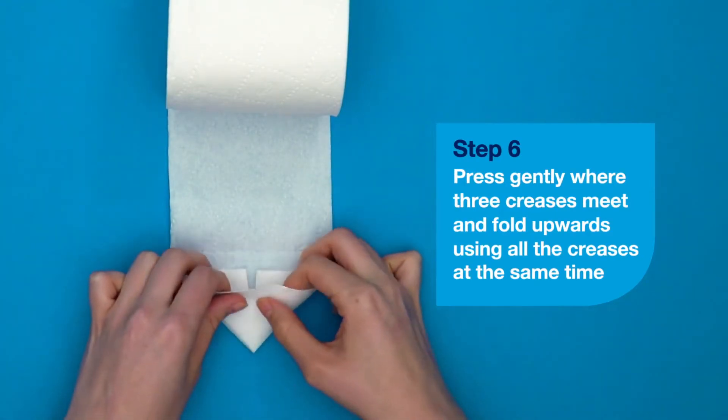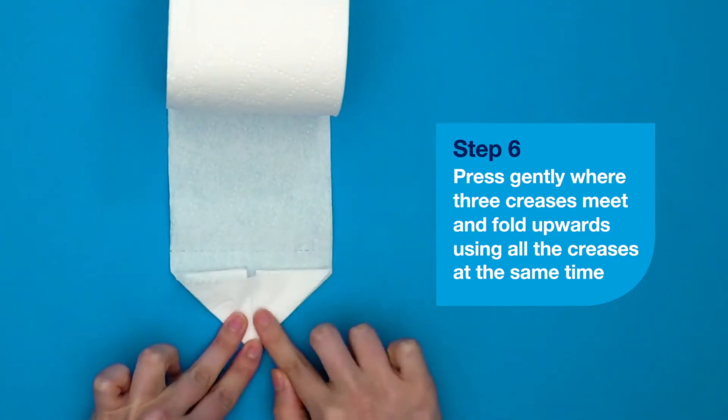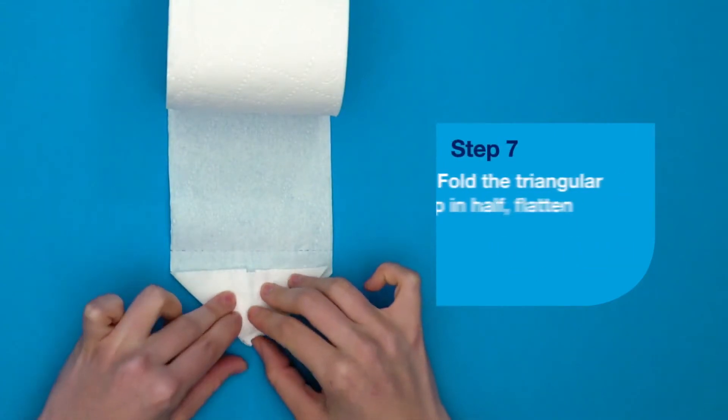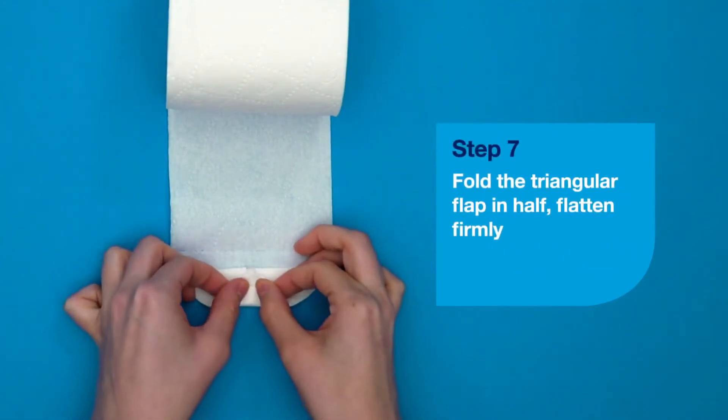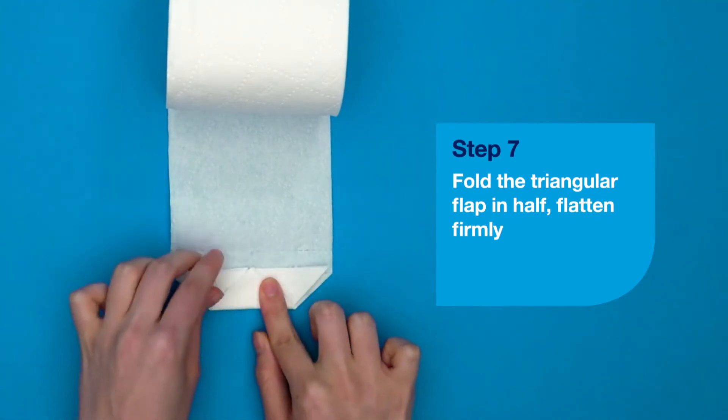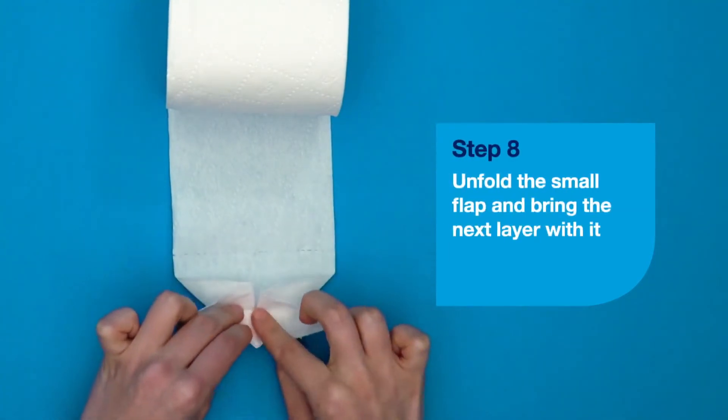Fold the triangular flap in half and flatten firmly. Unfold the small flap and bring the next layer with it.